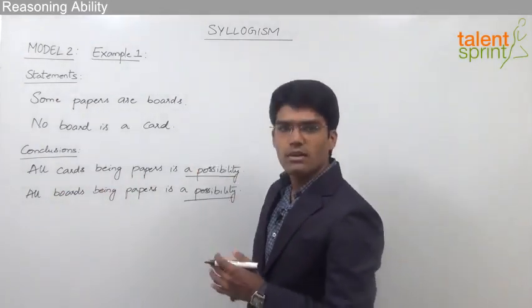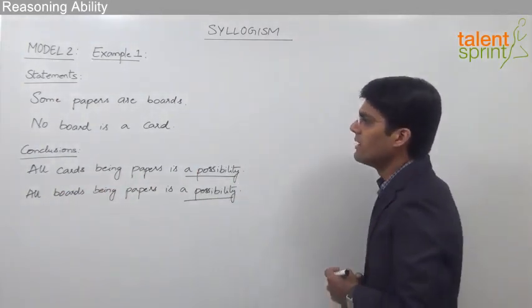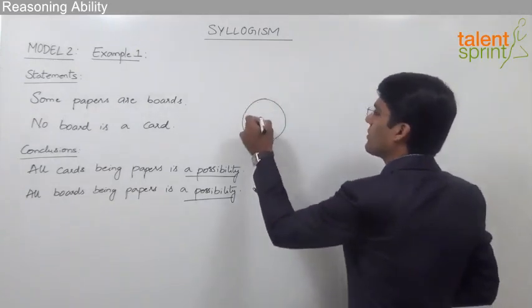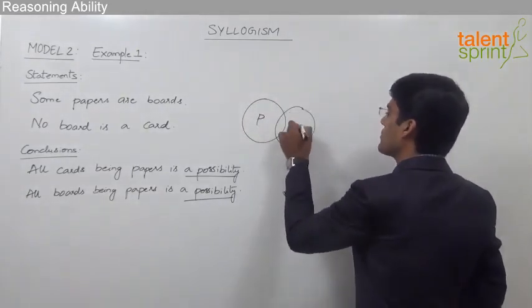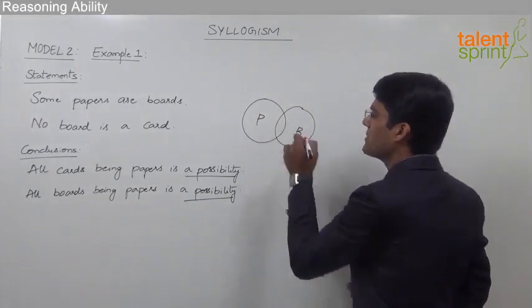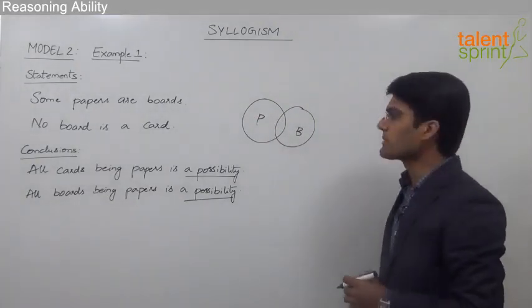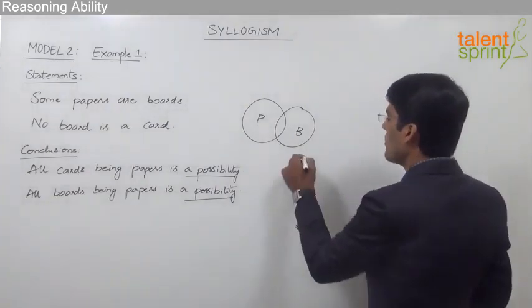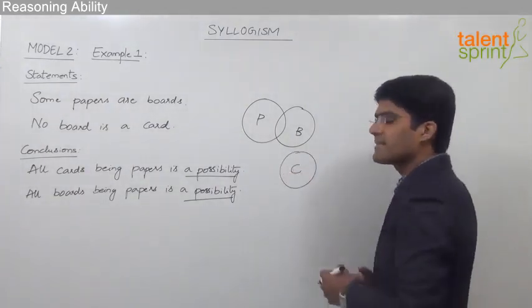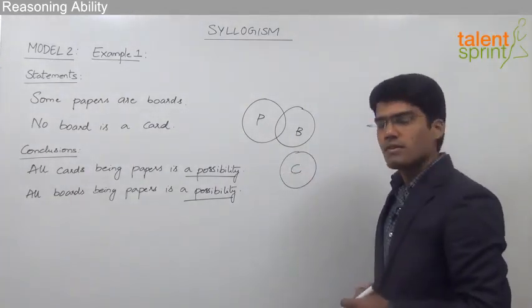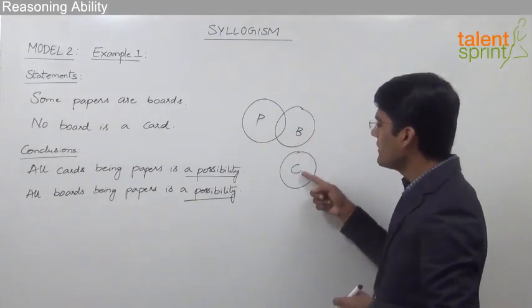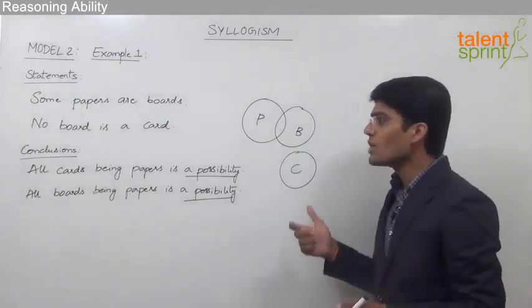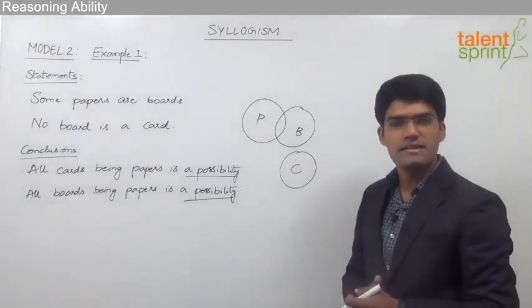Let us first draw the basic diagram for the given statements. Some papers are boards can be shown as an overlapping circle diagram, which shows some papers are boards. The second statement, no board is a card, is shown with no overlapping between boards and cards. Remember, there are various possible ways of drawing the Venn diagrams for these given statements.